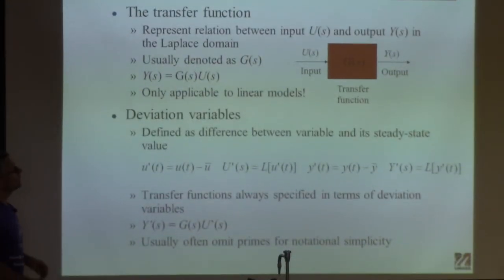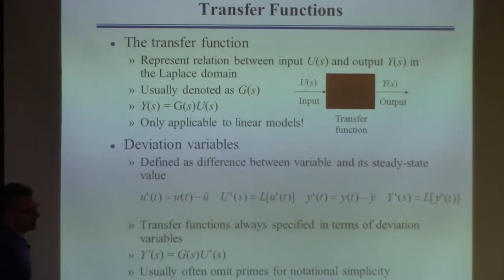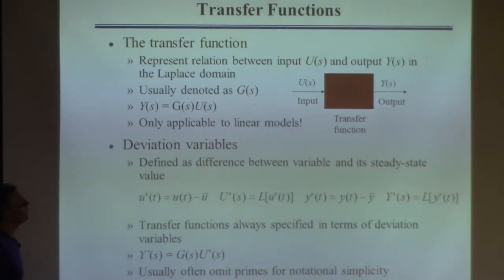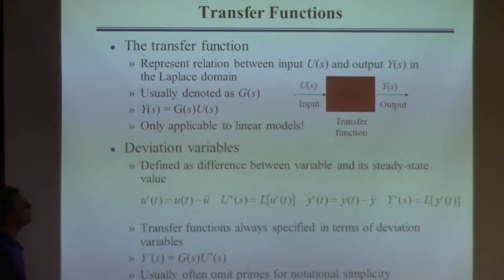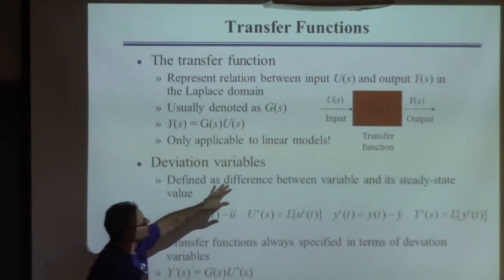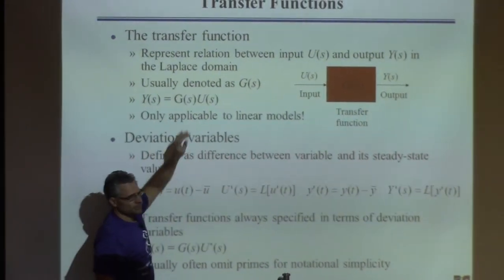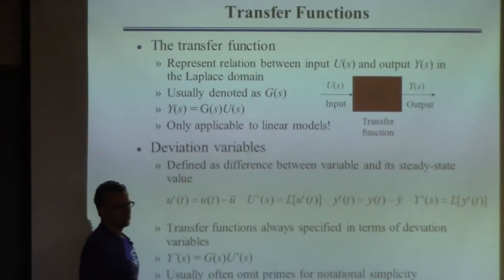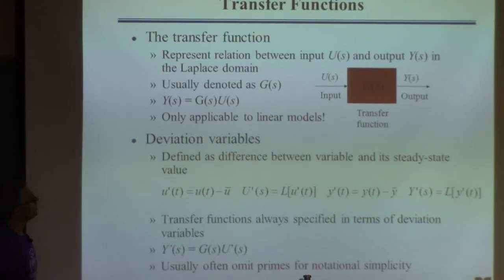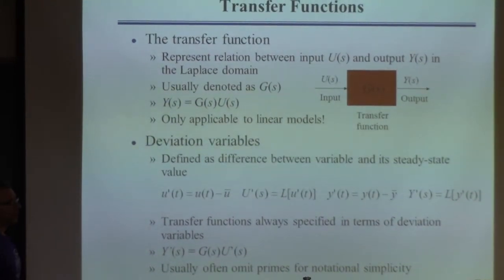We've generically called the transfer function G of S. Sometimes we might give it subscripts to mean something different, but G of S means transfer function. This is what's called a block diagram — that's equivalent to this equation. It says you take U, you multiply it by G, and that equals Y.